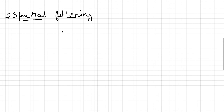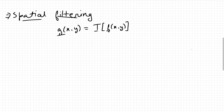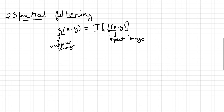The key equation in this section is: G(x, y) = T[ F(x, y) ]. Here, F is the input image, G is the output image we get after performing some modification, and T is the transformation operator that defines what kind of transformation we apply. Depending on what T is, there are two methods we can use.